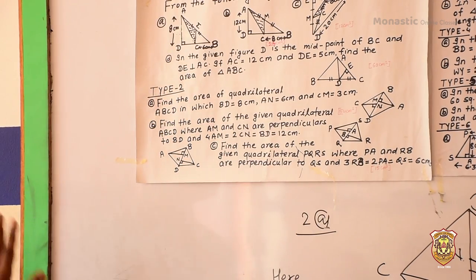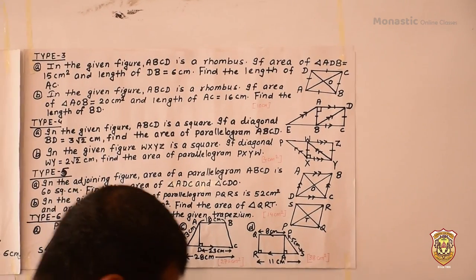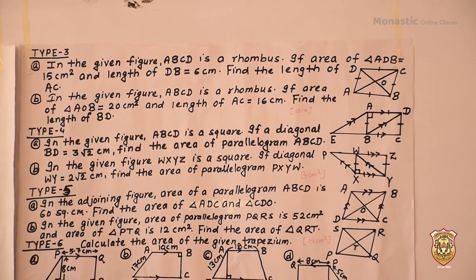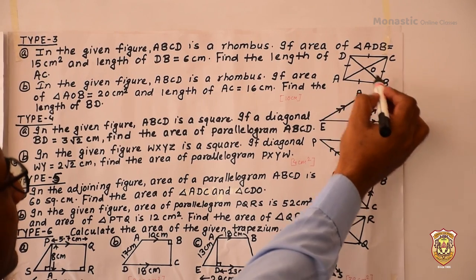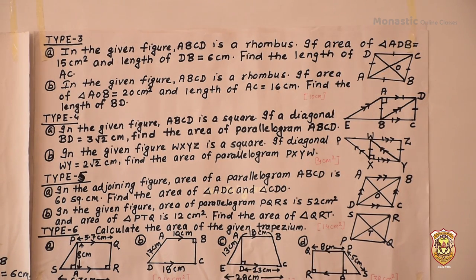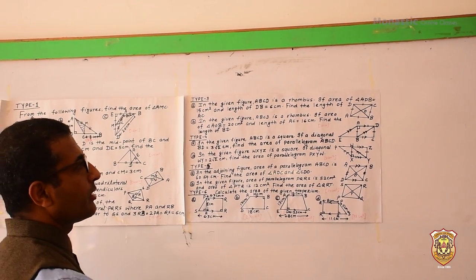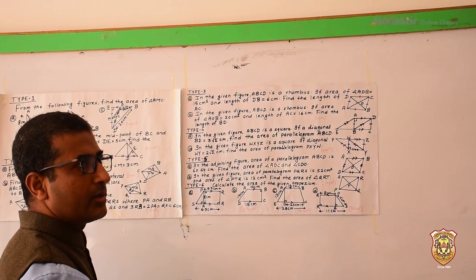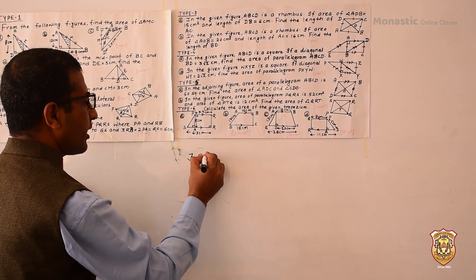Now we can do Type 1 and Type 2 questions. Come to Type 3. Look at question number 3e — ABCD is a rhombus, the area of triangle ADB is given, and one diagonal is given. We have to find the length of the other diagonal. You know the area of a rhombus is ½ × D1 × D2, the product of the diagonals. Using this, if we know the area of the rhombus and one diagonal, we can find the other diagonal.